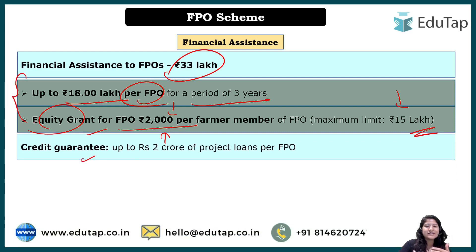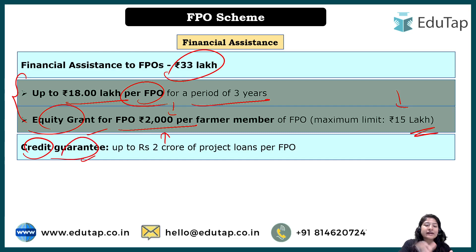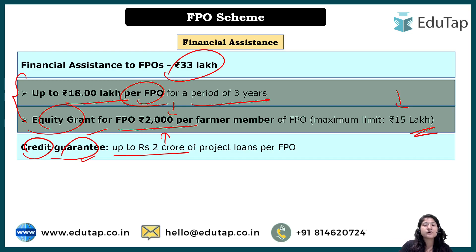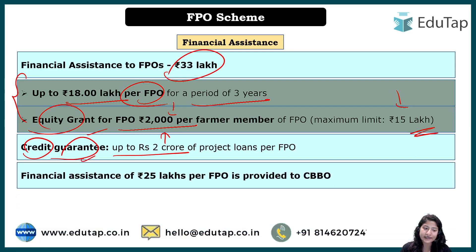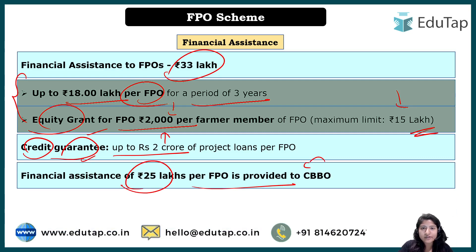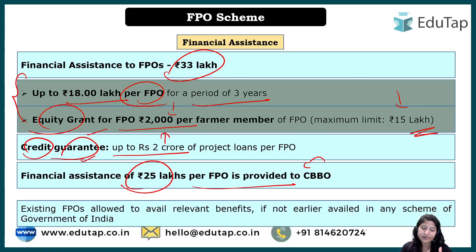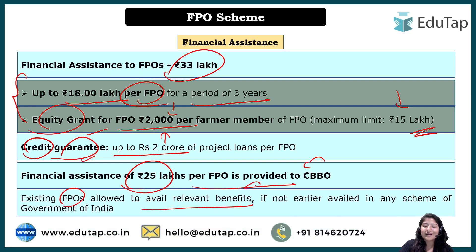For credit guarantee: if the FPO wants to take a loan, that facility is also available. Credit guarantee means the government will provide a guarantee on behalf of FPOs when they go for project loans — up to rupees 2 crore. When an FPO goes to a bank for a loan, the government provides this trust/guarantee. Additionally, financial assistance of 25 lakh rupees per FPO is provided to CBBOs for administration and training activities.